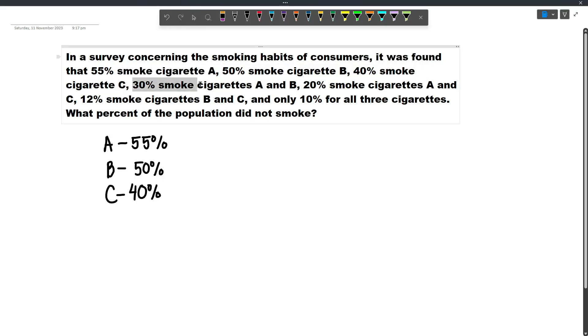And then 30% smoke cigarettes A and B, 20% smoke cigarettes A and C, and then 12% smoke cigarettes B and C. And then finally, 10% of the population smokes all cigarettes.